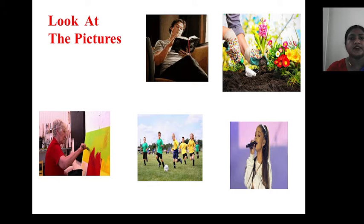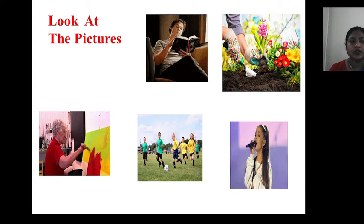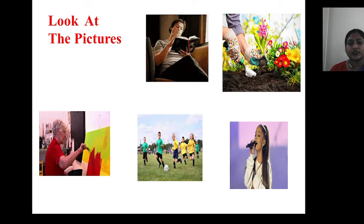Here, students, we are seeing some pictures. There are different people doing different types of activities. Can you see? The first one is reading a book. The second one is tilling the soil without grass and planting new trees. The third one — what is the man doing? Painting on the wall or drawing a picture. The fourth picture shows boys playing football in the field, enjoying the game.